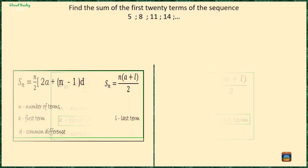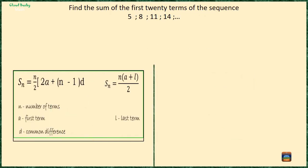Let's look at our first sequence. Suppose we want to find the sum of the first 20 terms of the sequence 5, 8, 11, 14 and so on. It means we want the result of adding 5 plus 8 plus 11 plus... up to 20 terms.